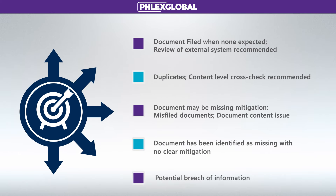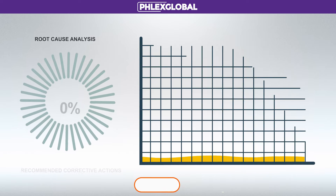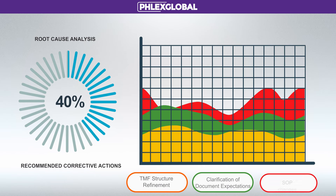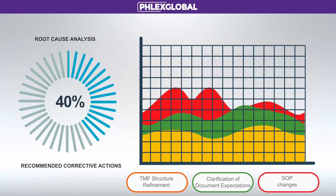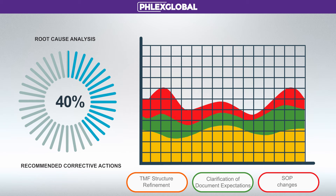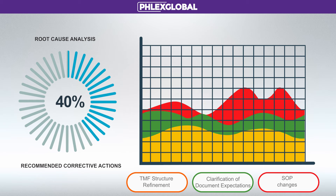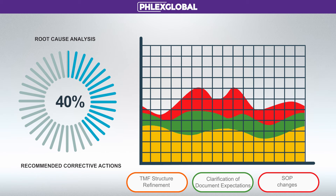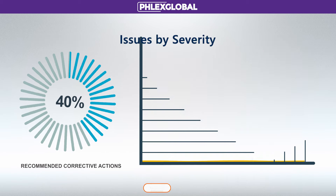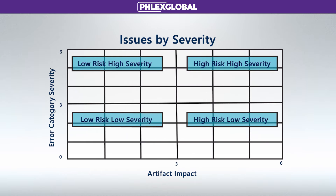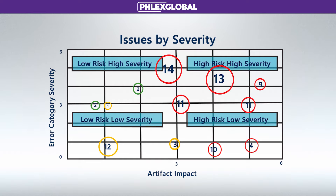The Phlexglobal TMF Health Check also includes visualizations such as heat maps to guide risk mitigation, which includes root cause analysis and recommended corrective actions such as TMF structure refinement, clarification of document expectations, or SOP changes. For example, by mapping artifact impact levels against error category severity, you can prioritize your findings with the highest risk and impact.